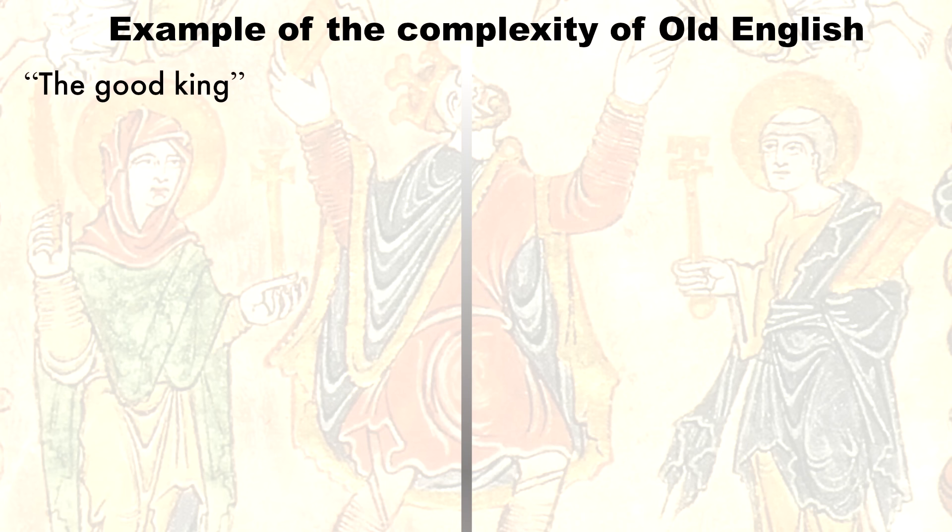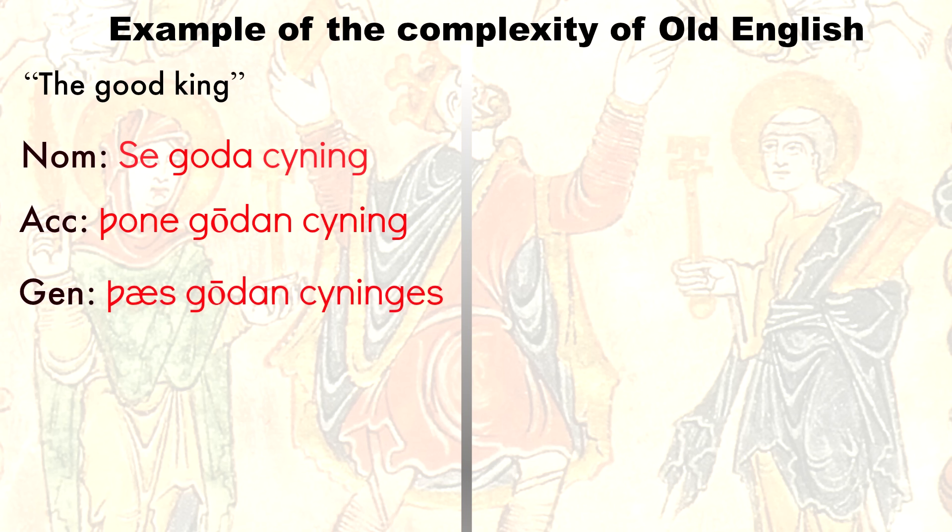So let's take a simple phrase like the good king and look at it in Old English. In Old English, notice that all three words in this phrase can change. In the nominative case, in the accusative case, in the genitive case, in the dative case. So the definite article changes, the adjective changes,